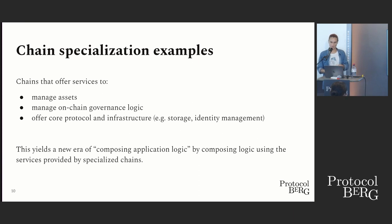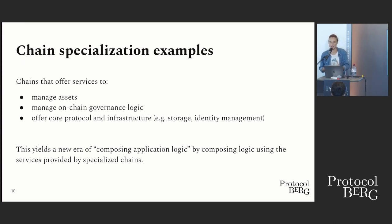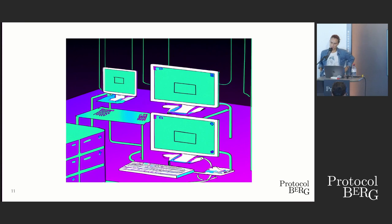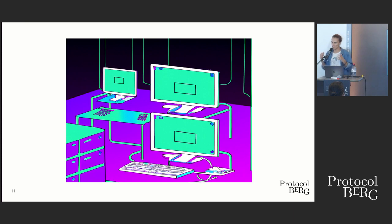Some examples of specialized chains are ones that can specialize in managing assets — which we'll see in this workshop — others specialized in managing on-chain governance logic, and others really specialized in offering core protocol and infrastructure like storage and identity management. The multi-chain thesis is really a shift in mindset: from a single world computer hosting a whole array of business logic, to a network of connected specialized computers.